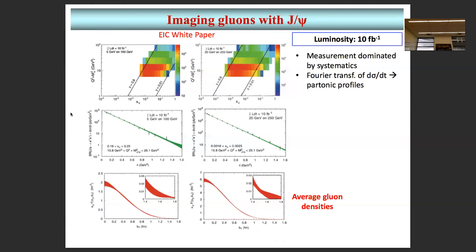In the J/psi simulations shown, only the electron decay channel was assumed. If you also have muon detection, you gain another factor of two in statistics. The JLab detector design includes a muon identifier. You don't need a full-fledged muon spectrometer — just a muon ID so that you still measure muon momentum in the central tracker but know those tracks are muons. A talk at our Stony Brook workshop showed the nice gain in signal-to-background when using muons. Being able to use muons is favorable for controlling systematics in precision J/psi measurements.